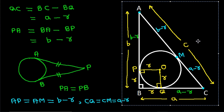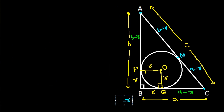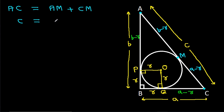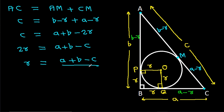Now we have AC equal to AM plus CM. And AC is c, which equals AM (b minus R) plus CM (a minus R). So c equals a plus b minus 2R. Therefore 2R equals a plus b minus c, and R equals (a plus b minus c) divided by 2.